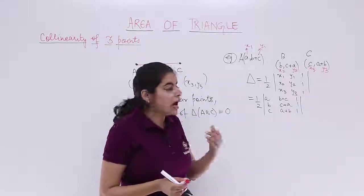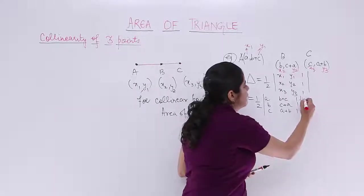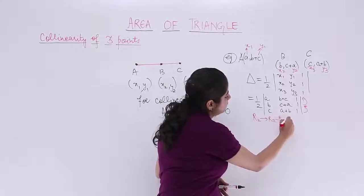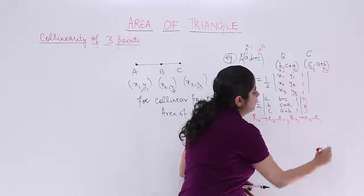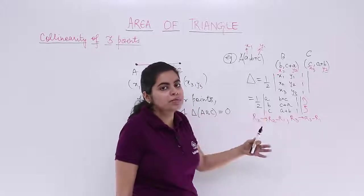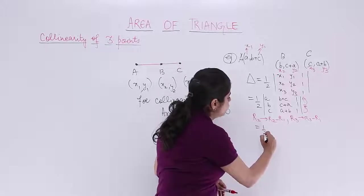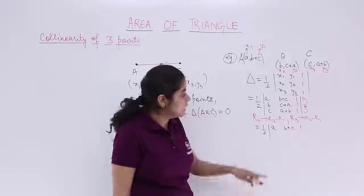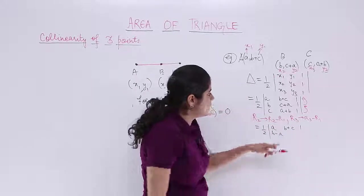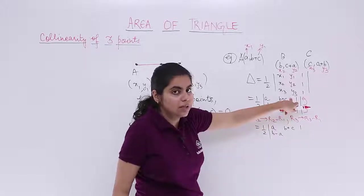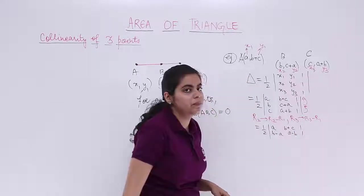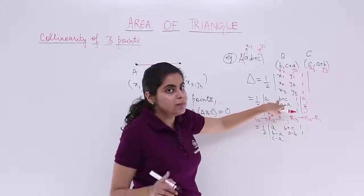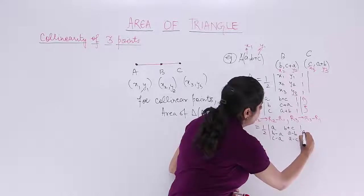Now you just need to evaluate this determinant. To ease the calculation, I apply row operations: R2 → R2 − R1 and R3 → R3 − R1. These operations do not change the value of the determinant. After applying R2 − R1: the row becomes (B−A, A−B, 0). After applying R3 − R1: the row becomes (C−A, A−C, 0). R1 remains unchanged.